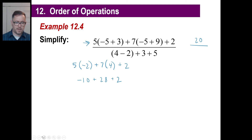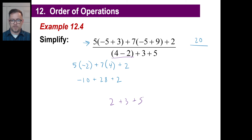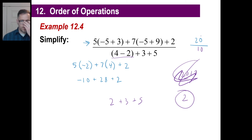Let's try the denominator. Parentheses first — that's going to be 2, plus 3, plus 5. That's a piece of cake; the answer is 10. 20 divided by 10 is 2. Once you know how to do one of these things, just do it 3 or 4 times and you're done — there's nothing new to it.